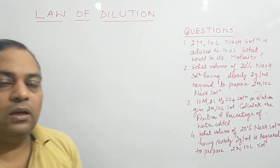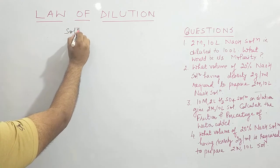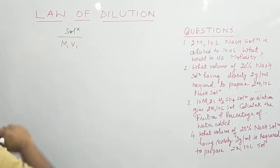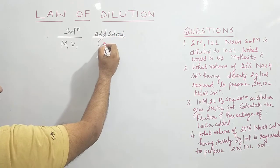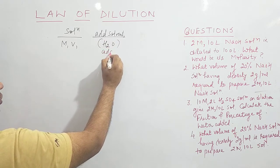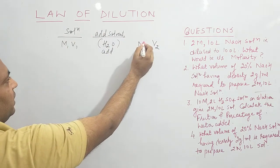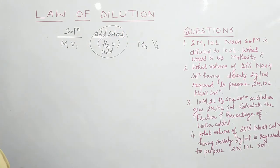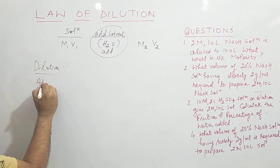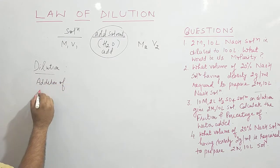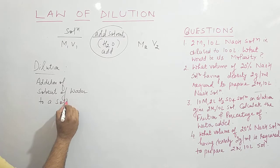Students, today we will discuss the topic: the Law of Dilution. Suppose we have a solution with molarity M1 and volume V1. If we add solvent — and if that solvent is water — the volume V1 will change and the molarity M1 will become M2. This addition of solvent to a solution is called dilution. Dilution simply means the addition of solvent or water to a solution.